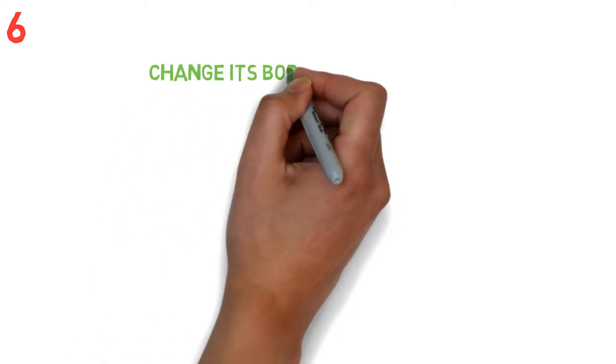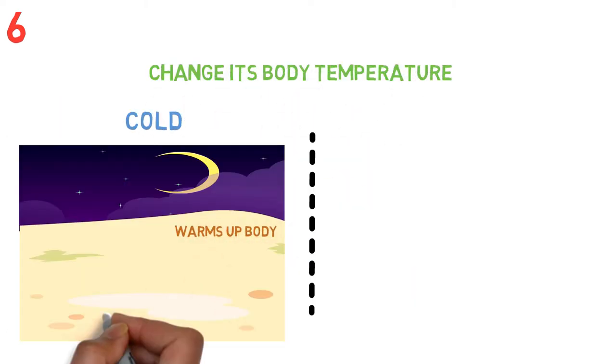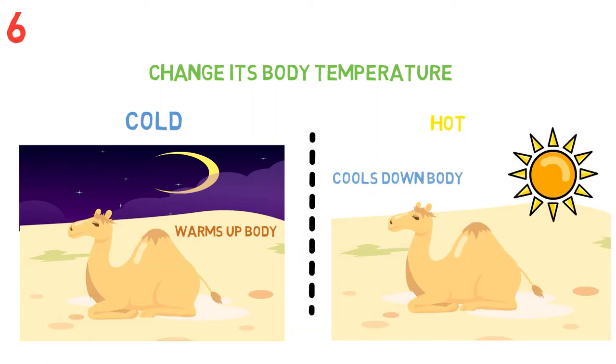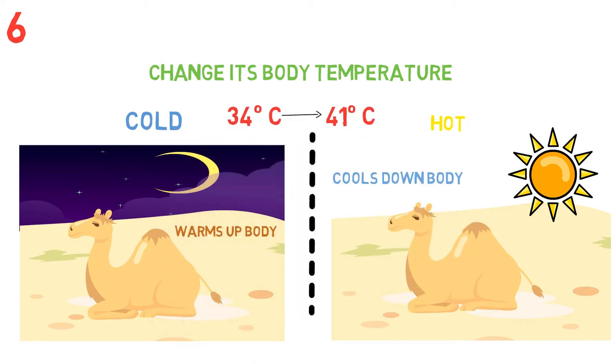6. A camel can change its body temperature. When a camel is cold, it warms its body up, and when a camel is hot, it cools its body down. It can change body temperature from 34 degrees Celsius to 41 degrees Celsius.